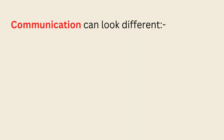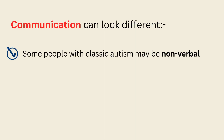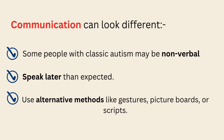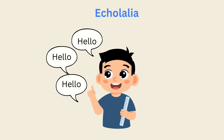Communication can look different. Some people with classic autism may be non-verbal, others may speak later than expected, and some use alternative methods like gestures, picture boards, or scripts. Echolalia — repeating words or phrases — can also be a way to process language.